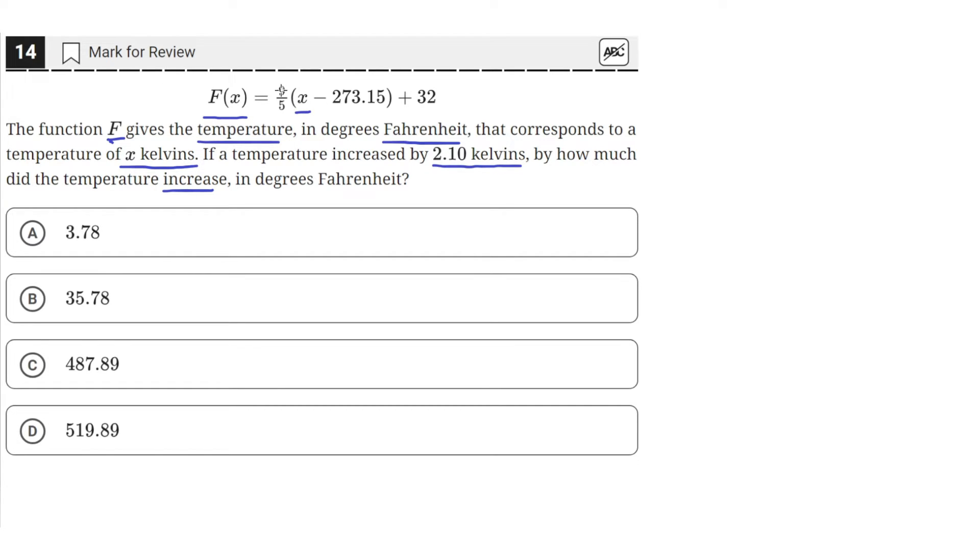So we can distribute out this 9 over 5 to these two terms. So this new function F of x would look like 9 over 5 times x minus 9 over 5 times 273.15 and then the plus 32.